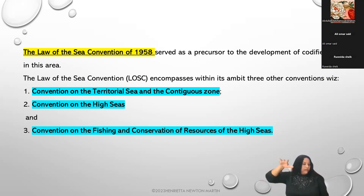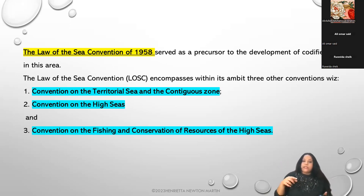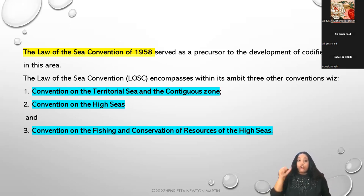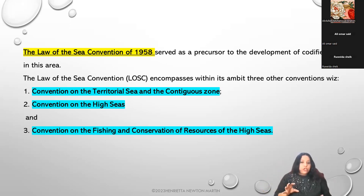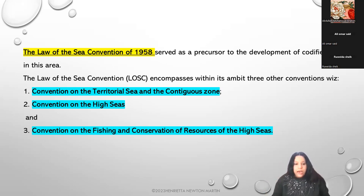In the modern era, the law of the sea convention of 1958 actually led to the precursor of development of codified law in this area. The law of the sea convention encompasses within its ambit three other conventions: convention on the territorial sea and contiguous zones, convention on the high seas, and convention on fishing and conservation of resources of the high seas.